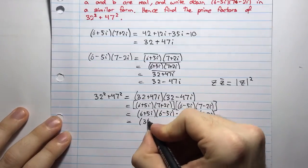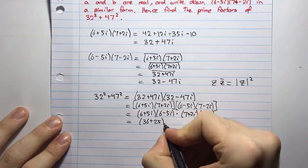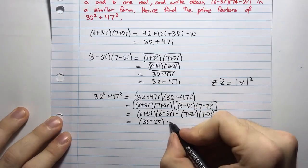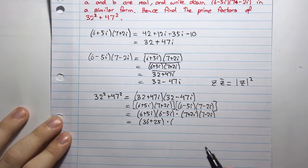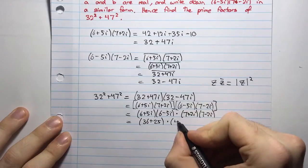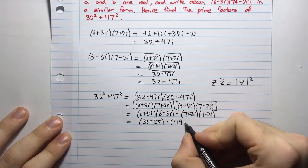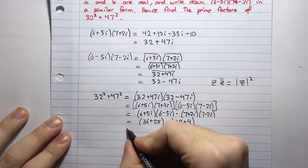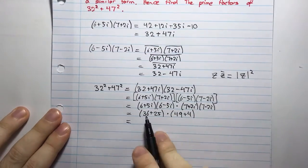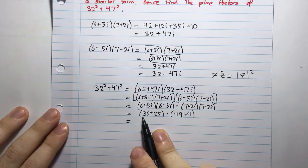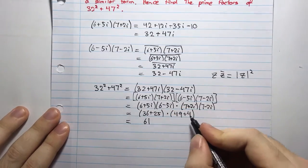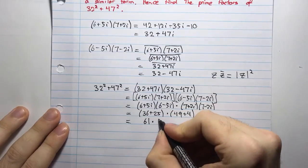So, that's 36 plus 25 multiplied by, again, I'm going to use that formula, and I'll have 7², which is 49, plus 2², which is 4. And so, what's 36 plus 25? That will be 61. And what's 49 plus 4? That will be 53.